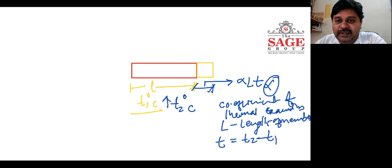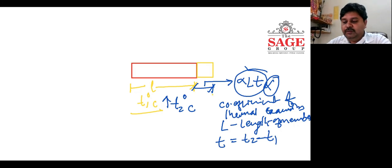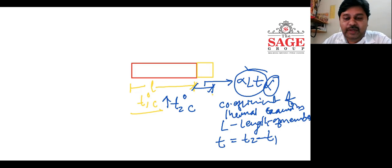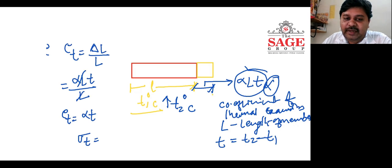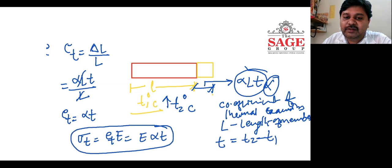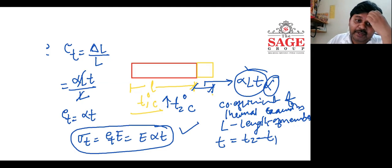Here we see that we have restricted the change in length of the rod after the rise in temperature. When we talk about strain, strain is the change in length with respect to the original length — that is alpha·L·T divided by L — which gives us alpha·T. To get the temperature stress, we multiply the temperature strain by E, which gives us E·alpha·T. So this is the temperature stress.